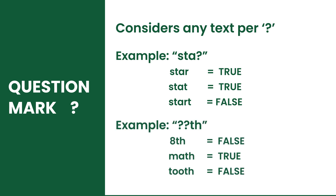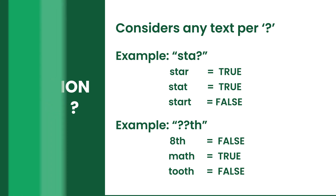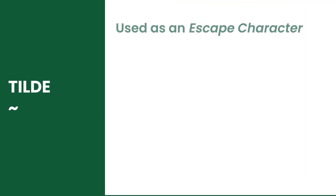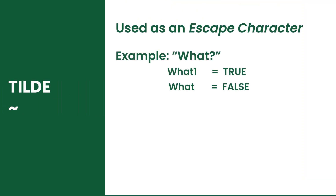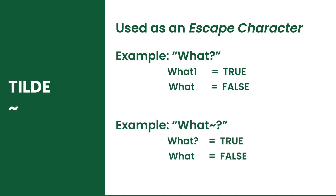For example, if you use 'sta?' it will recognize values such as 'star', 'stat', and so on. Lastly, we have the tilde. This wildcard comes in handy when you don't want the asterisk or question mark to function as wildcards.